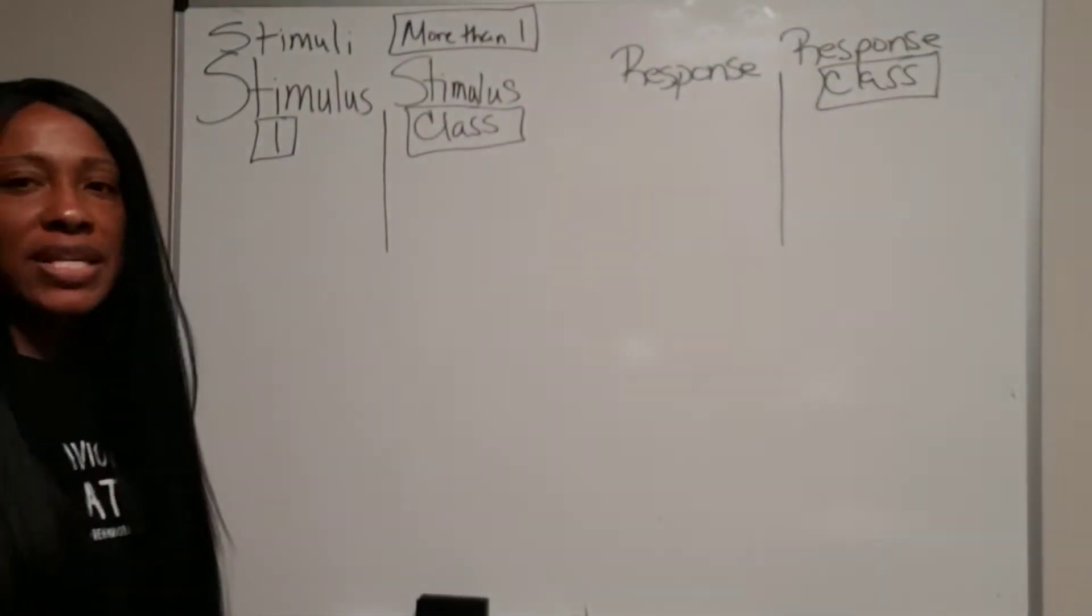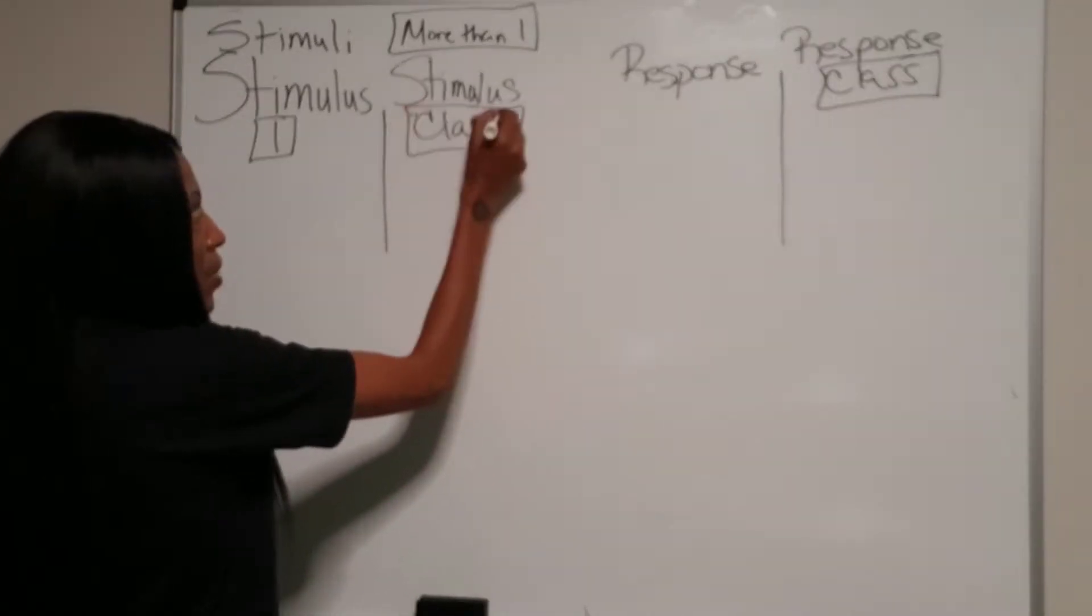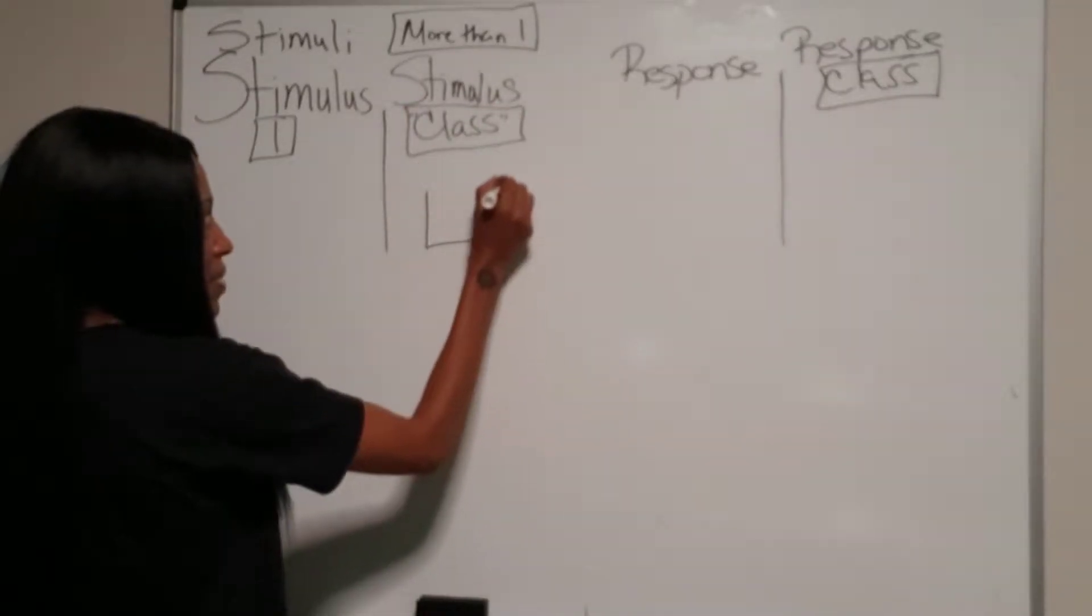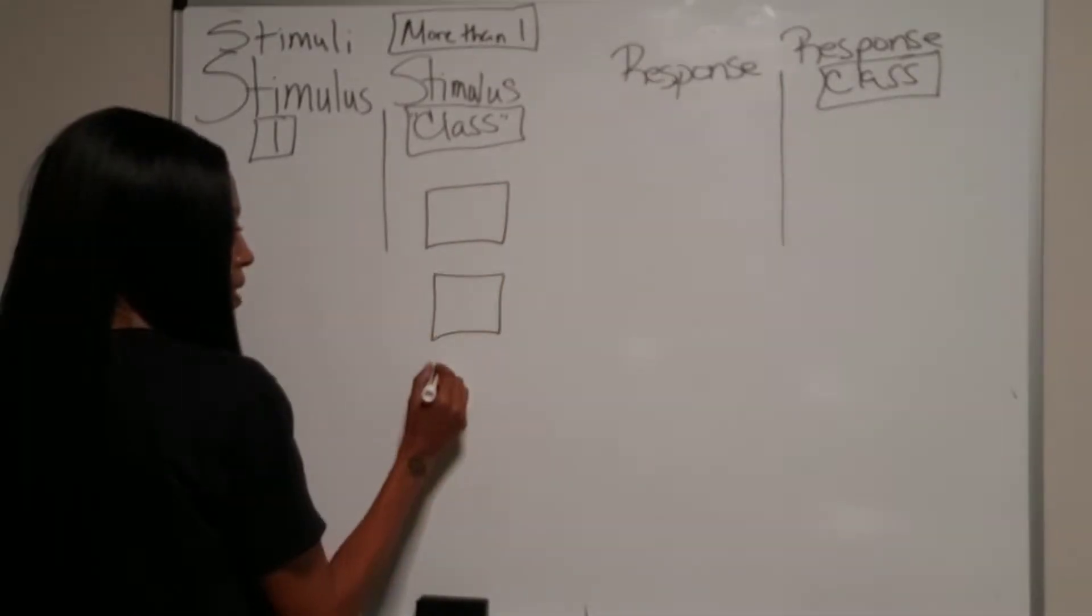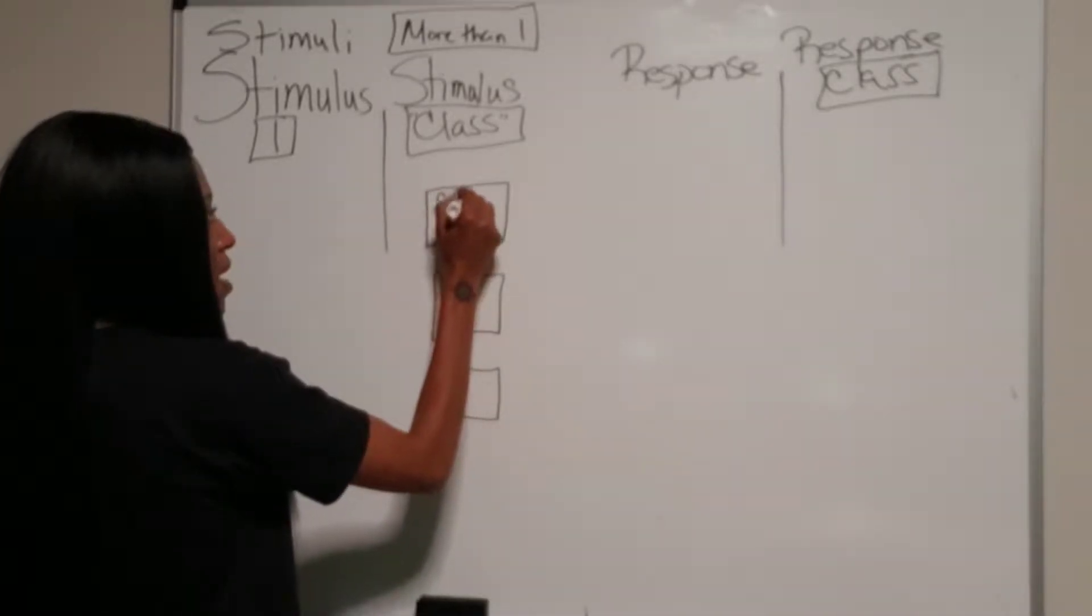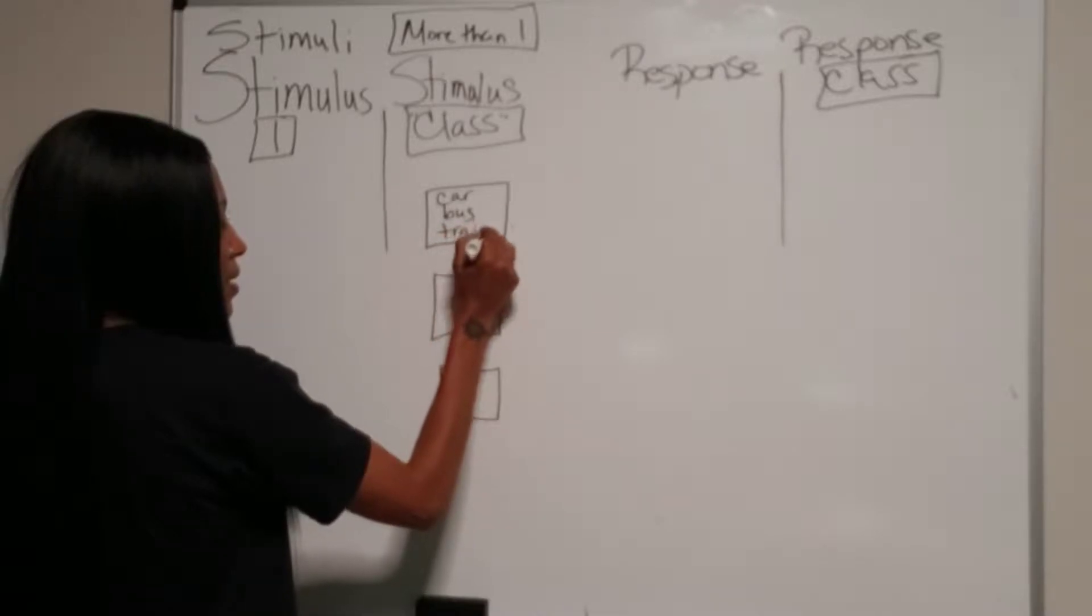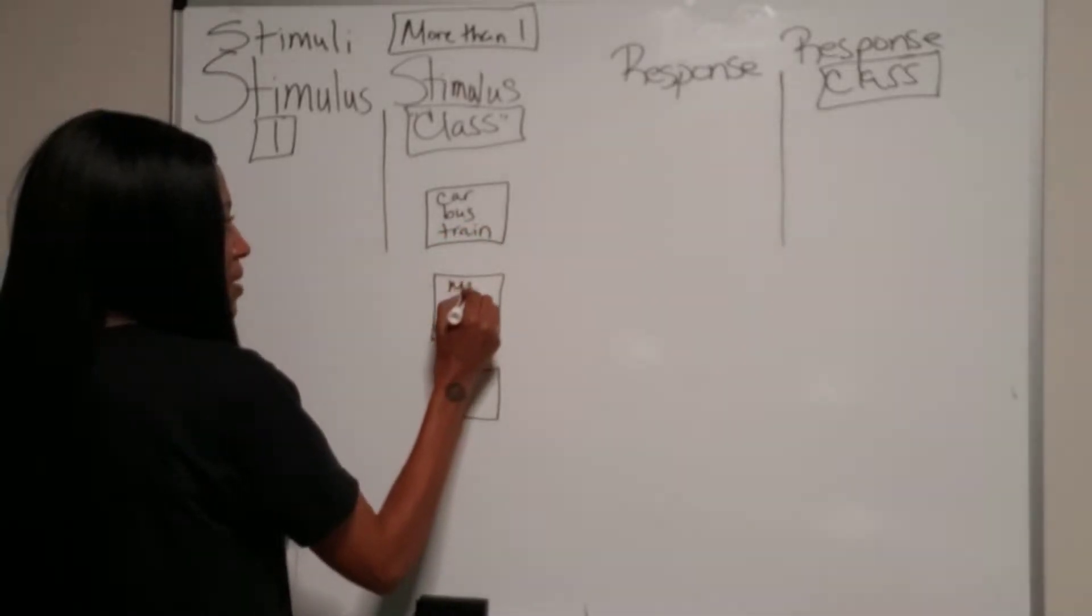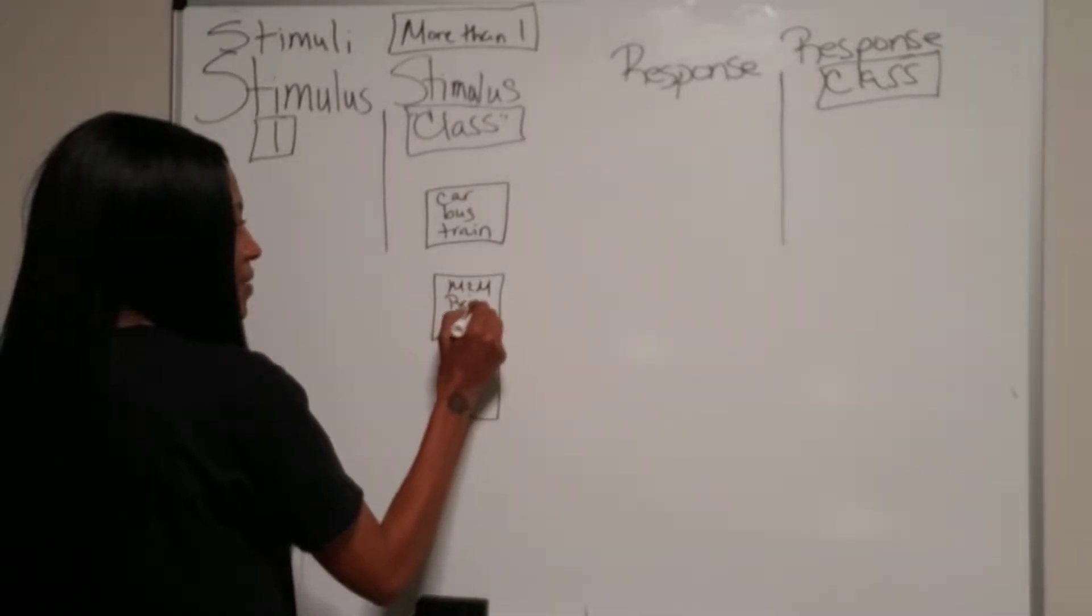So to give you an example, let's say I have a class, which is a group of things. Let's put a group of things in this box. How about we put a car, bus, train, and we do M&Ms, Reese's, Snickers.